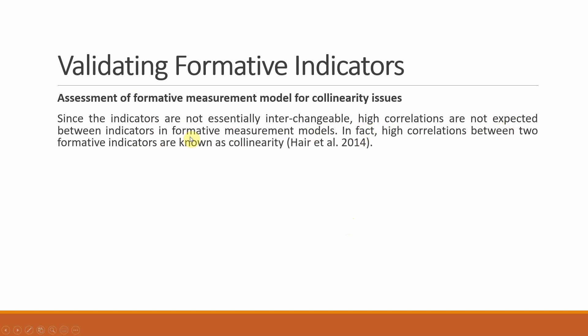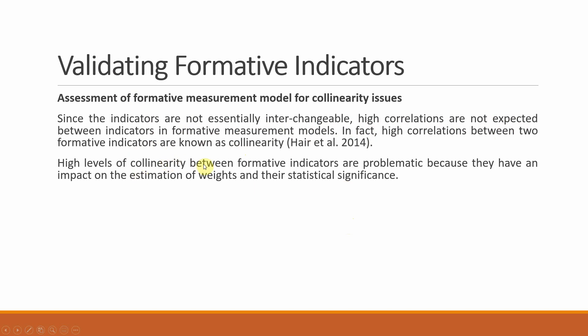High correlations between two formative indicators are known as collinearity. High levels of collinearity between formative indicators are problematic because they have an impact on estimation of weights and their statistical significance. Since the items are not interchangeable — they are different items measuring different concepts — they should not have high correlations. So before you use formative indicators for further analysis, you need to validate them. The first step is assessment of collinearity issues.